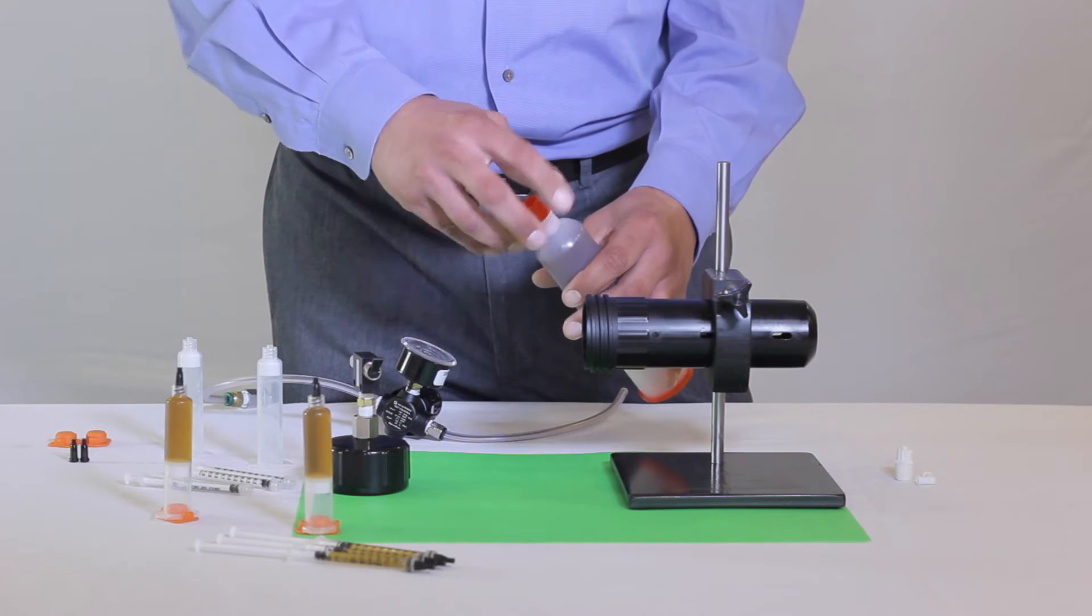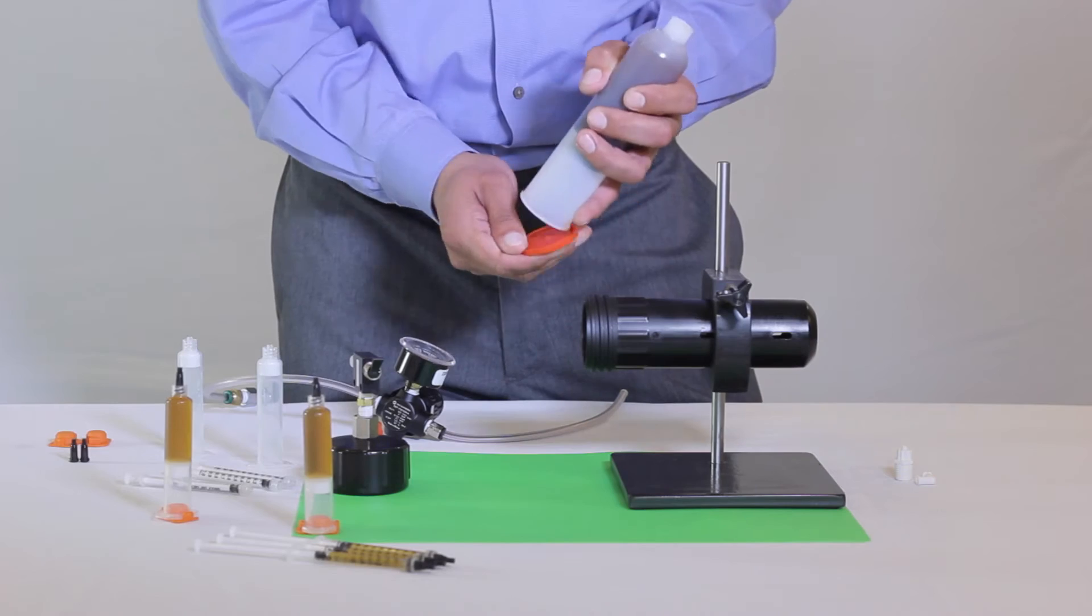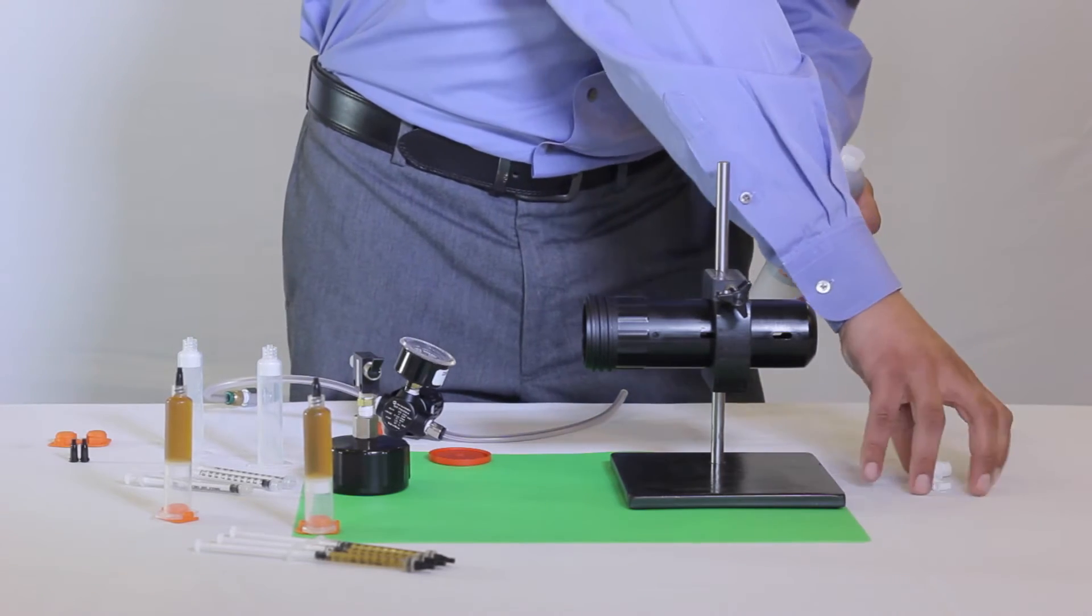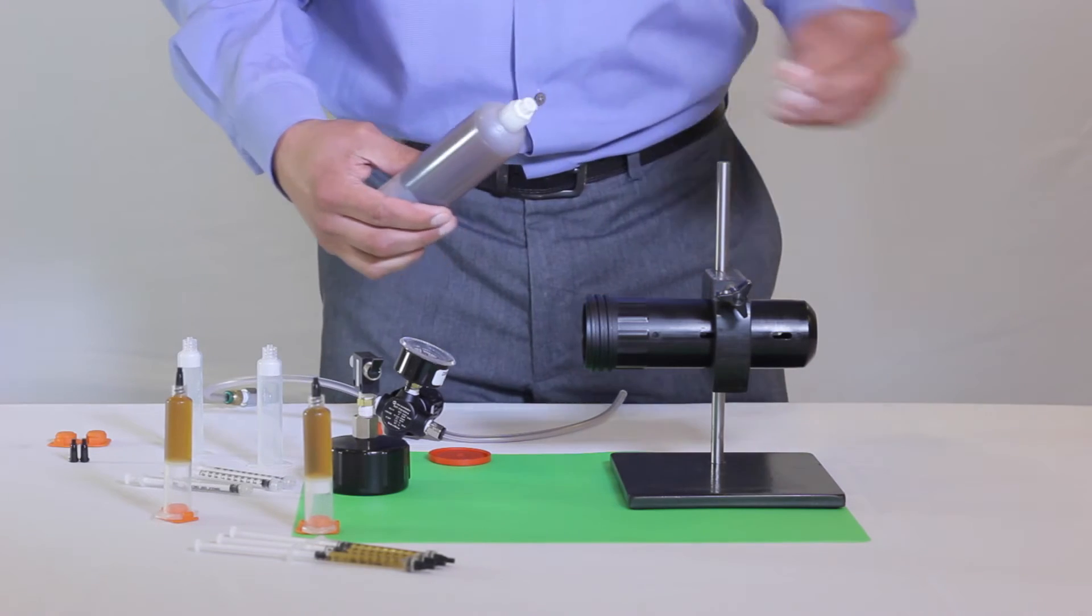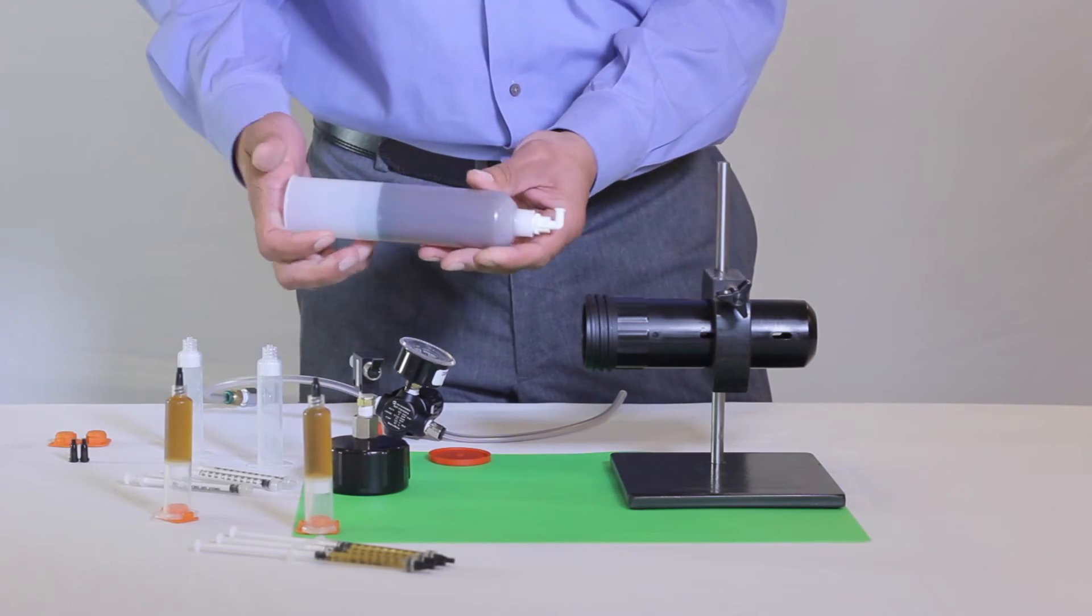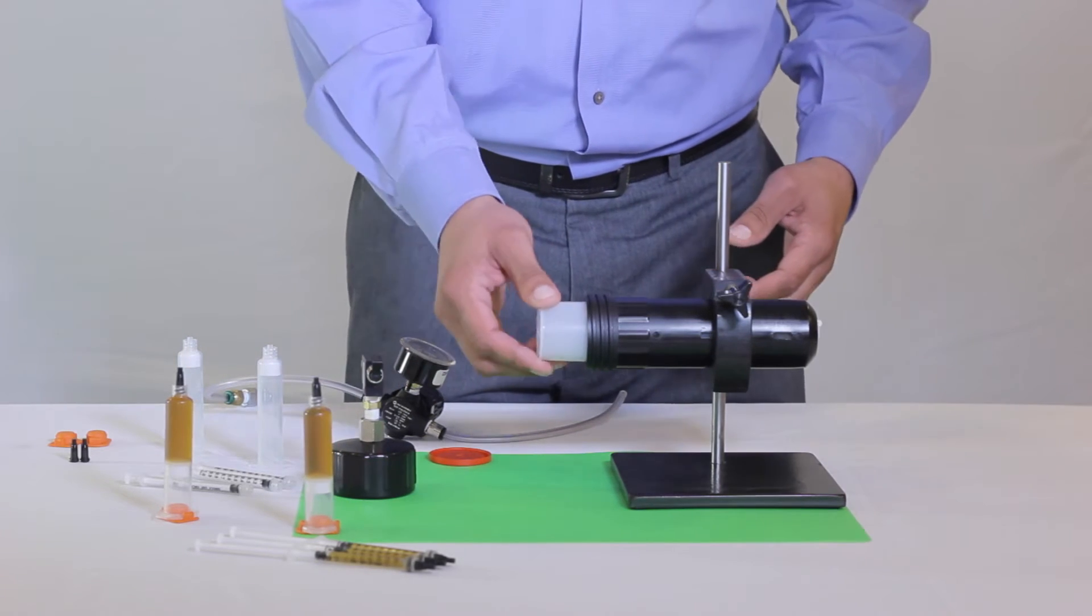Remove the tip cap and end cap from the pre-filled cartridge of material. Attach your ¼ inch male lure lock fitting to the dispensing end of the cartridge. Then attach your female lure to lure 90 degree elbow fitting to the male lure adapter at the end of the cartridge.